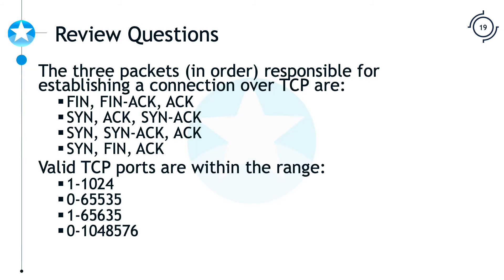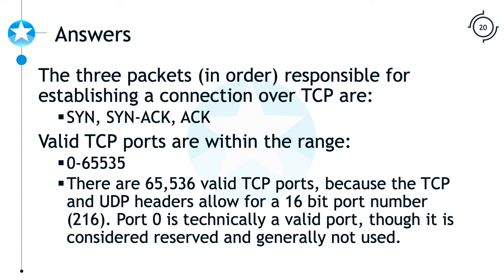Review questions: The three packets in order responsible for establishing a TCP connection are SYN, SYN-ACK, and ACK — that is our three-way handshake. Valid TCP ports are in the range of 0 through 65,535 — technically port 0 is not used, so 1 through 65,535 would also be accepted. This is a two-byte field used with both UDP and TCP.